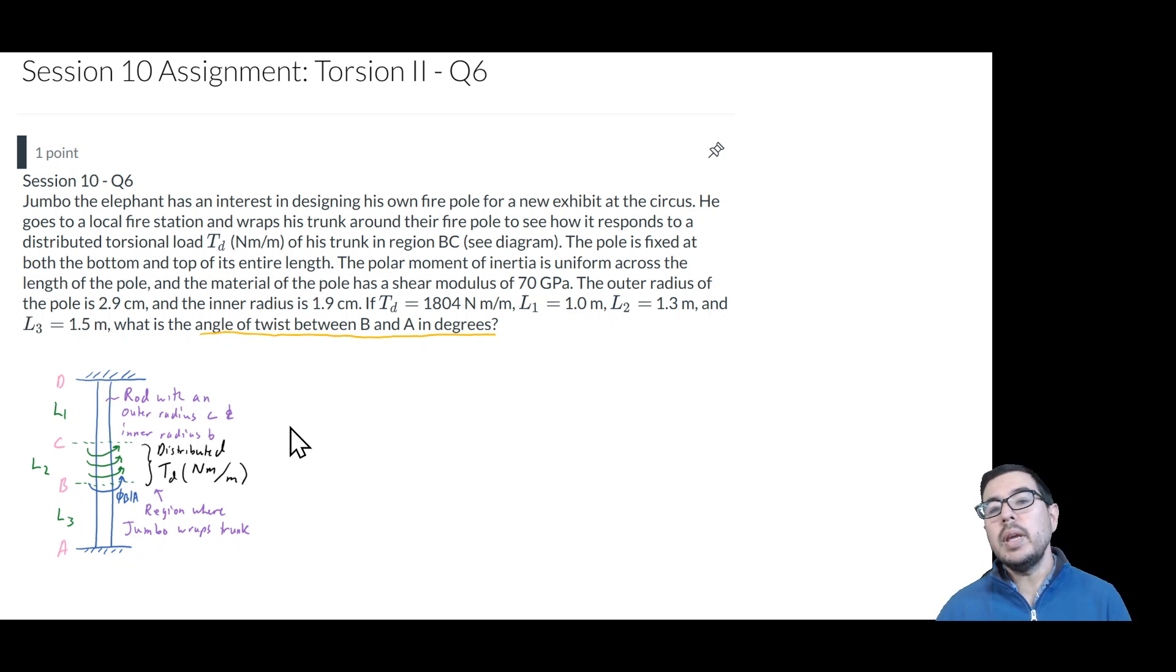In this question, we have a rod constrained between two walls and a distributed torque applied in a midsection between B and C. The question is asking, what is the angle of twist between points A and B? And it wants it in degrees.